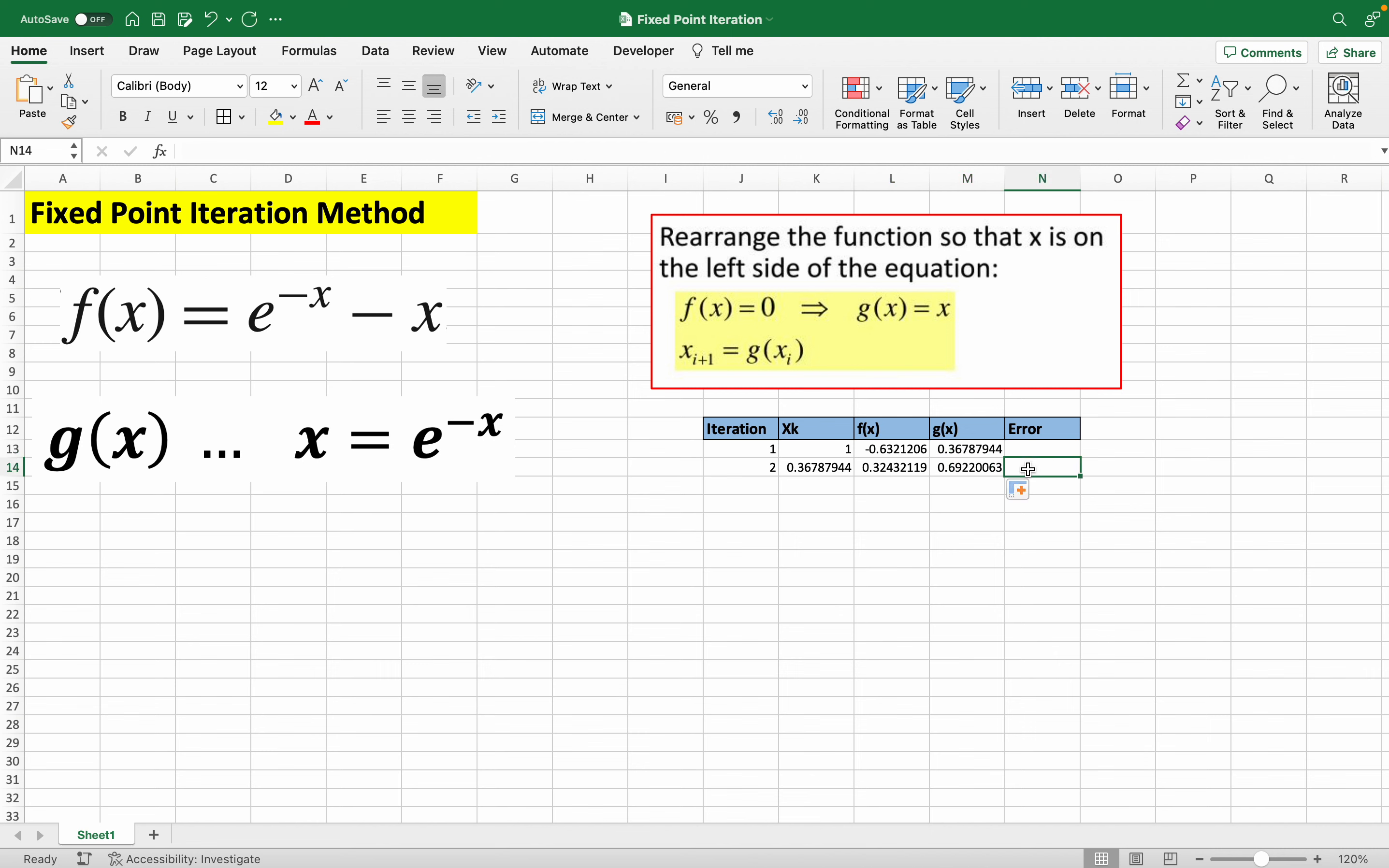Now we can have an error, where the error is the absolute value of our second x minus our first x. And afterwards, our job is done here.